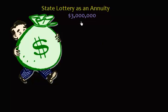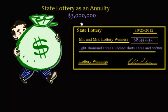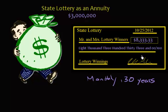Welcome to the video on annuities. In this example we're going to do a state lottery as an annuity. You won $3 million. But instead of the state lottery giving you a check for $3 million, they give you a check for $8,333.33 monthly for 30 years.